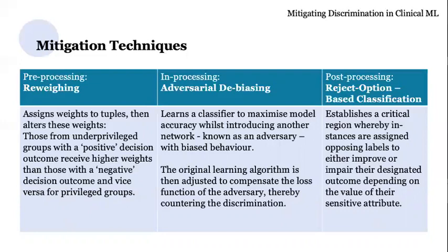Reject option-based classification manipulates the outcome of the algorithm by establishing a critical region. Within this critical region, instances are assigned opposing labels to either improve or impair their designated outcome depending on the value of their sensitive attribute. This improves the outcome for underprivileged groups whilst making the privileged groups slightly less favourable. The classification algorithms employed include logistic regression and random forest, prescribed by the examples in the toolkit for each mitigation method, so they differ for each mitigation method accordingly.